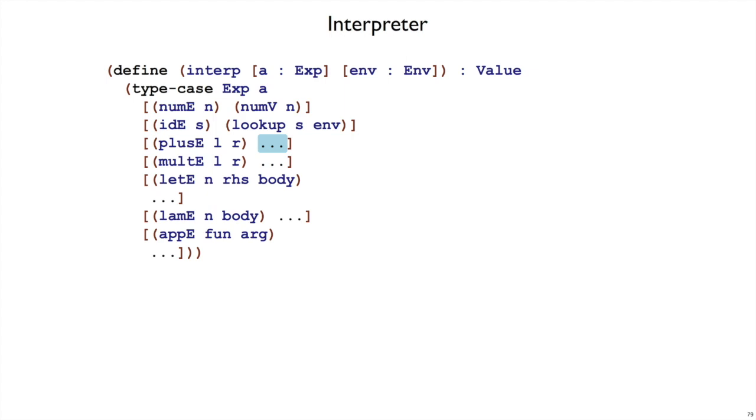How about plus e? When we have plus with two expressions, the template tells us that probably we want to interpret the left expression, and probably we want to interpret the right expression. In fact, that's what we want to do, we want to get those two numbers and add them up. This is what we used to write, but we can't just add with plus anymore, because these are not numbers. Interp returns values, not numbers.